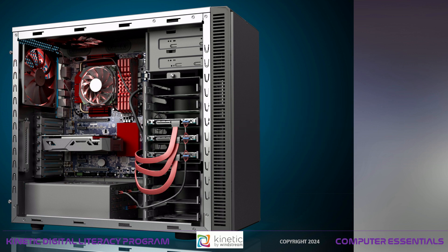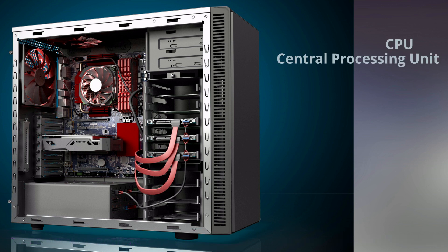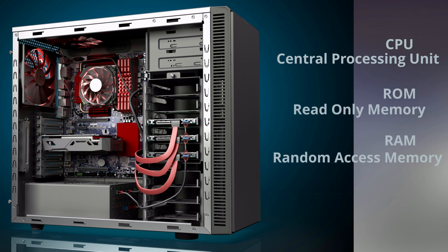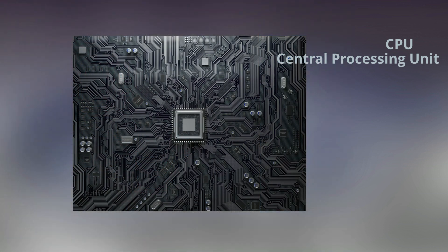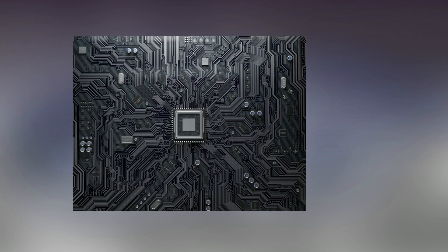Let's look inside the computer and talk about some of the main features: the central processing unit, or CPU, read-only memory, or ROM, and random access memory, or RAM. Inside every computer is a central processing unit, or CPU. The CPU is the engine inside the computer that makes everything work. All programs and operating systems, like Windows, are run by the CPU. The faster the CPU, like the larger the engine, the more applications the computer can run at the same time.